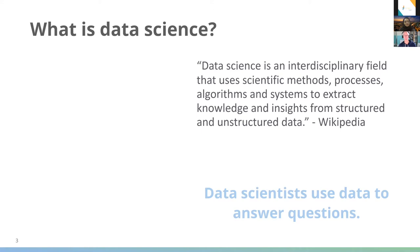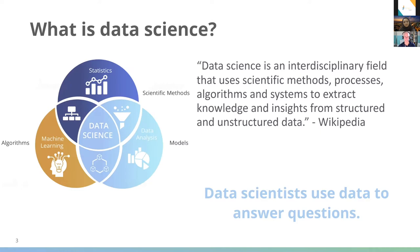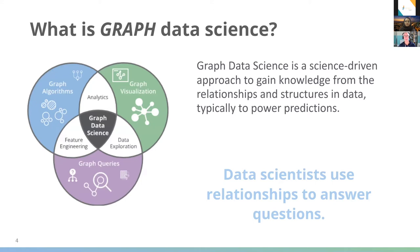A good place to start is: what is data science? Wikipedia classifies it as an interdisciplinary field that uses scientific methods, processes, algorithms, and systems to extract knowledge and insights from structured and unstructured data. You can think of it as combining statistics, machine learning, and data analysis — across all those fields, we have questions we want to answer and we're using data to solve them.